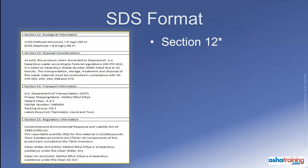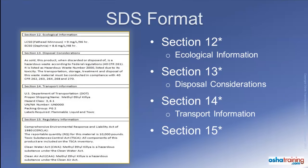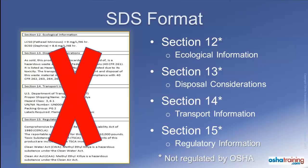Sections 12 through 15 — Ecological Information, Disposal Considerations, Transportation Information, and Regulatory Information — all deal with requirements regulated by other entities, such as the Environmental Protection Agency or the Department of Transportation. Therefore, these sections are not regulated by OSHA, but appear in the safety data sheet to be consistent with the GHS format.